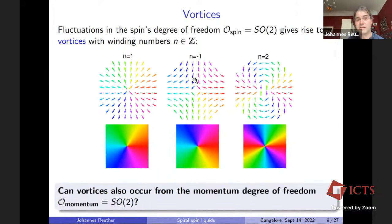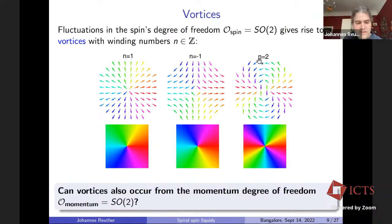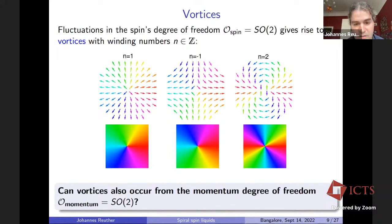The natural guess for fluctuations are vortices. We know vortices from SO(2) spins: fluctuations in the spin SO(2) degree of freedom give rise to vortices with integer winding numbers — examples being winding numbers 1, −1, and 2. The question is: can vortices also occur from the momentum degree of freedom, which is also SO(2)? To our surprise, this question has never really been discussed in the literature before.